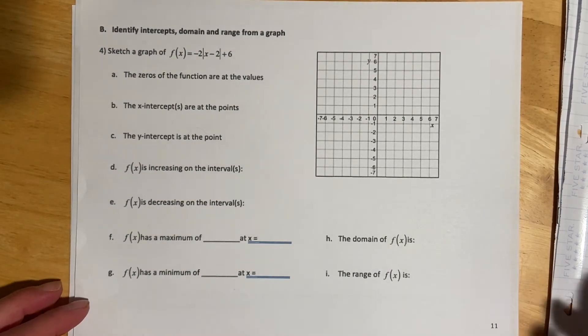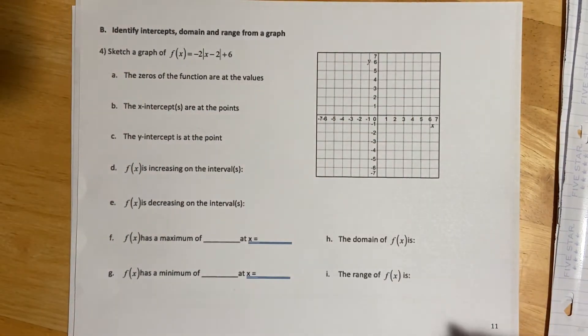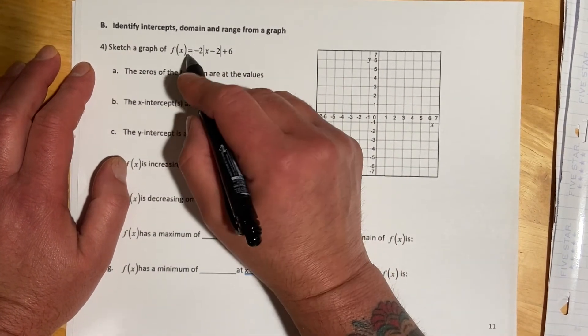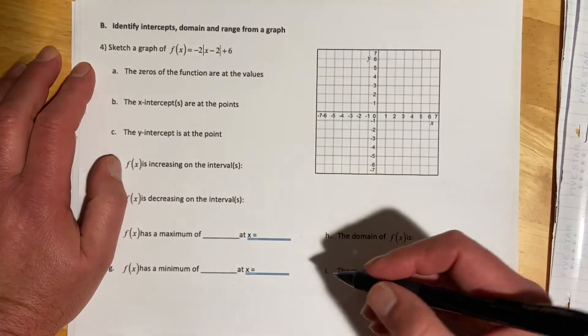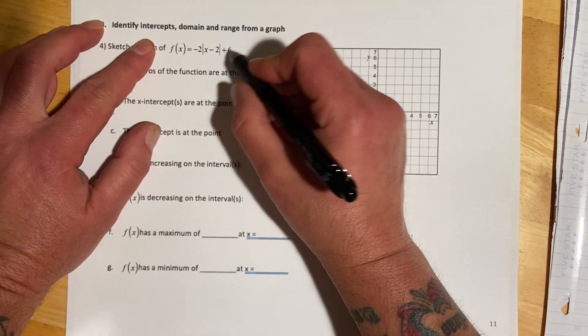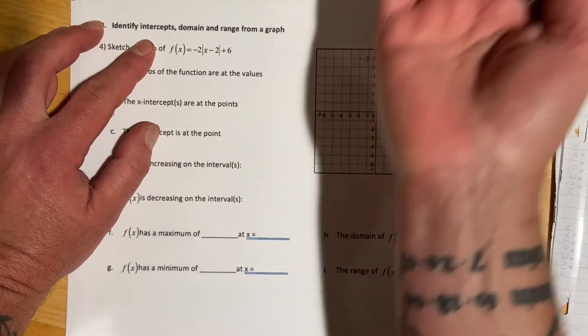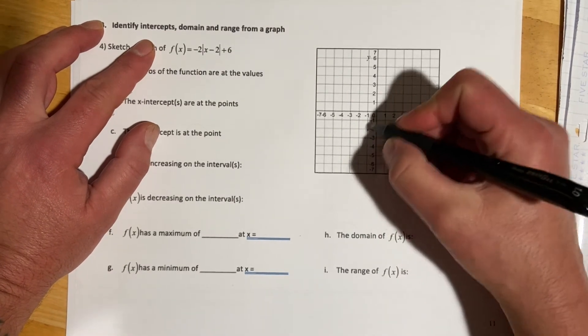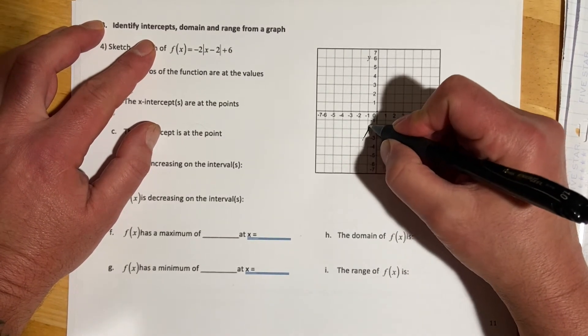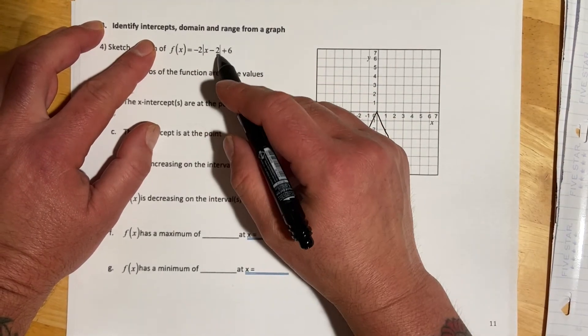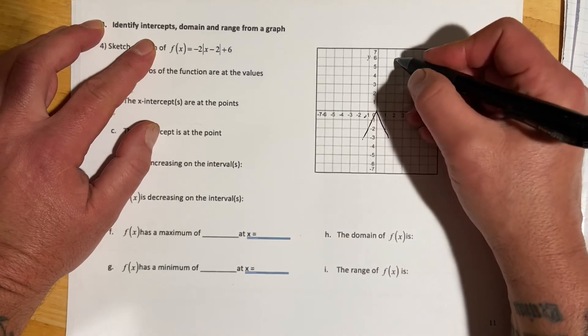In this last example, we're going to answer a bunch of questions that we've seen in earlier chapters, just with a different function. We're directed to sketch a graph of this and find all these things. This is going to go minus 2, so right 2, up 6, and then reflected and stretched by 2.